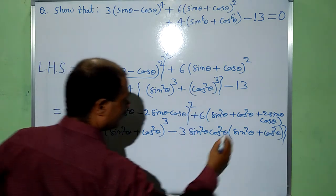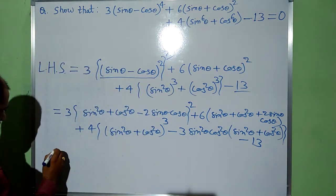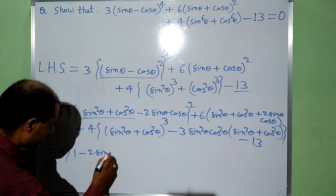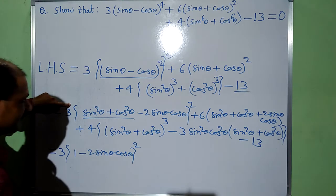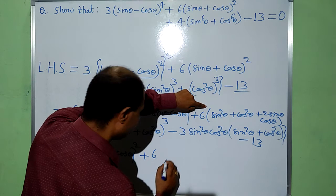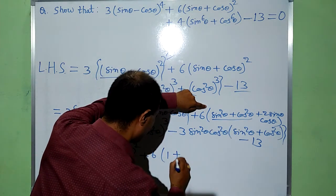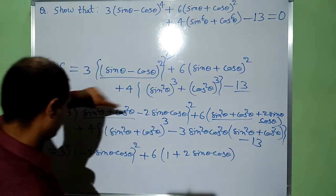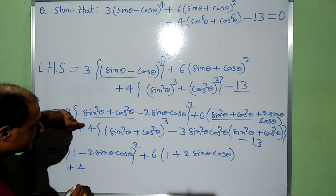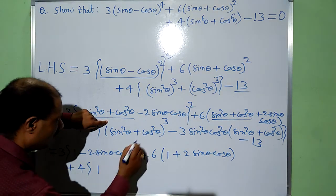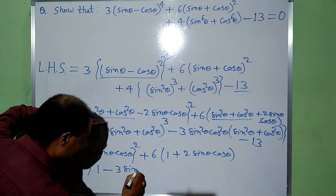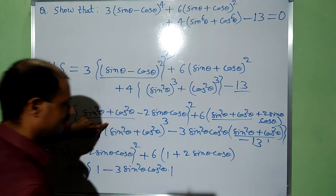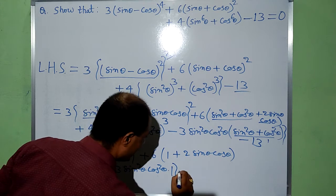This is also solved. Minus 13 is here already. Now we have 3, and this will give us 1 minus 2 sin θ cos θ, it is whole square, plus 6 into 1 plus 2 sin θ cos θ. From this we have 4 into — this will give us 1 whole cube, that is 1 minus 3 sin²θ cos²θ into 1 — this will give us 1. This is simplified, and minus 13.